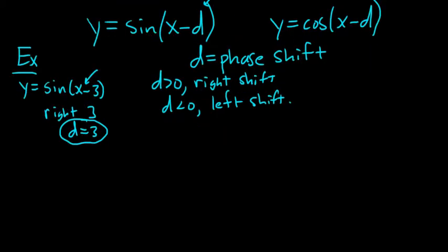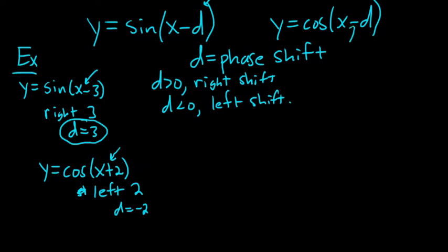Let's look at another example. Say we had y equals cosine of x plus 2. A couple ways to do it. Method 1 is using your previous knowledge. Whenever you add a number to the x, it's actually a shift left. So we're going to go left 2. In this case, d is negative, d is negative 2 because we're going left 2. Another way is just using this formula up here. You can think of this as x minus negative 2. Therefore, d is negative 2.